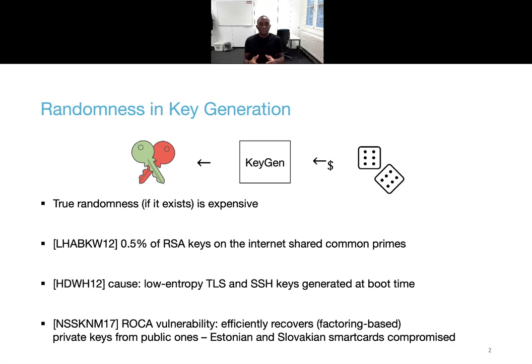Other consequences of randomness failure in practice were demonstrated by Nemec et al, who used Coppersmith's method to efficiently recover private keys from RSA public ones, because flawed implementations only selected specific primes instead of uniformly random ones. Those were the so-called ROCA attacks, and several real-world certified devices were shown to be vulnerable.